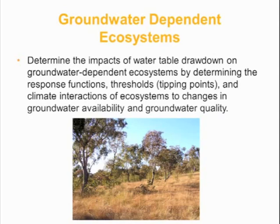Another area of interest is how water systems interact with vegetation and groundwater-dependent ecosystems. If water tables shift or drop, what is the impact of a declining water table on vegetation health, community health, and speciation? There's some interesting thinking going into this sort of work.